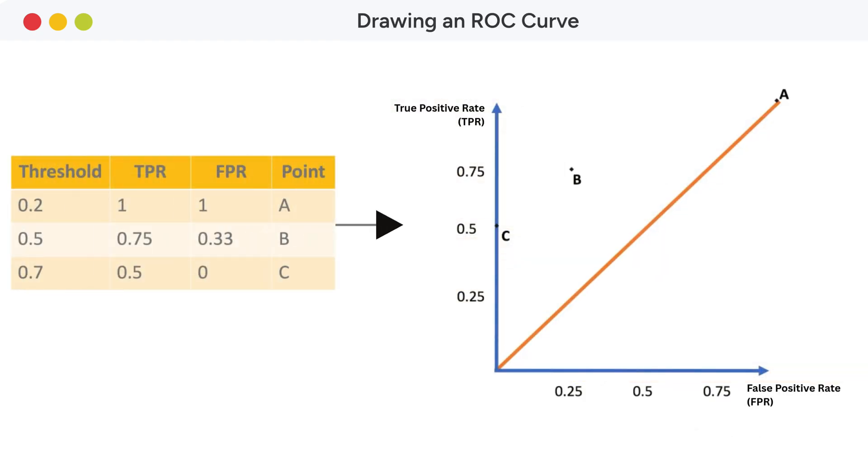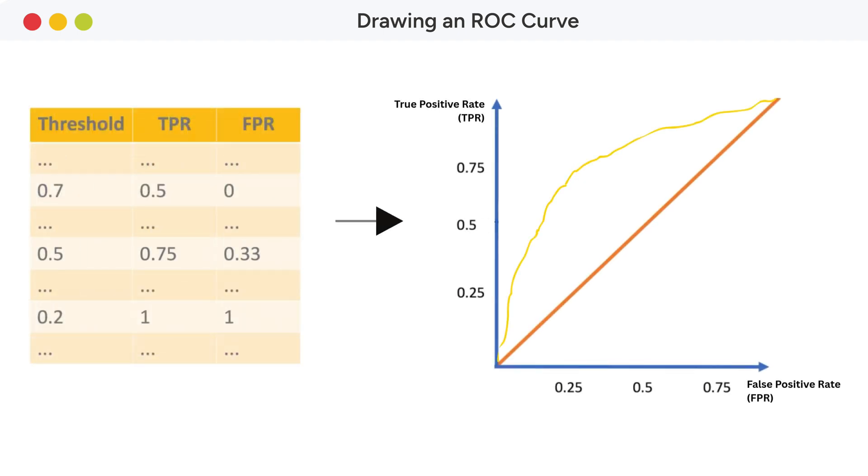For these threshold values, let's plot the false positive rates on the x-axis and the true positive rates on the y-axis. This dot represents the performance of the model for the default threshold. This dot stands for the threshold of 0.2 and this is for the threshold 0.7. Connecting these dots gives us a sketch of the ROC curve. In reality, the ROC curve is drawn based on many more threshold values and therefore many more pairs of these two rates.